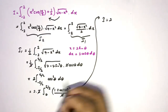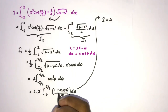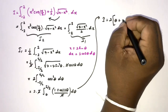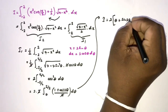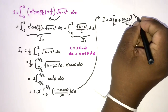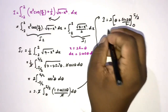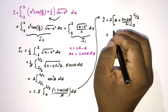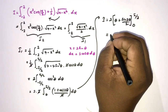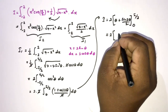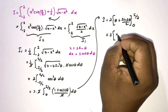I2 equals 2 times the integral from 0 to pi over 2 of 1 plus cosine of 2 theta d theta, which integrates to theta plus sine of 2 theta over 2, evaluated from 0 to pi over 2. Applying the upper limit gives pi over 2.